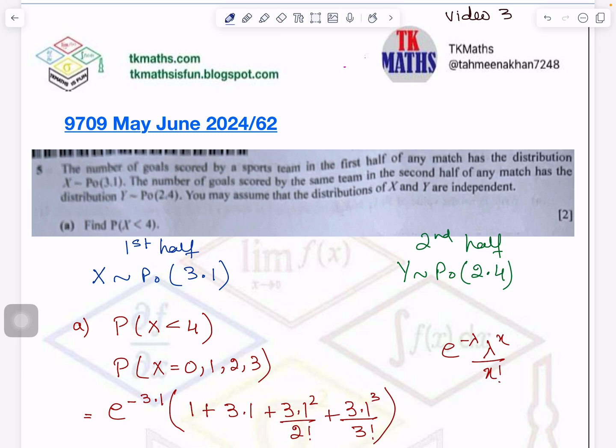So in this question they are talking about the number of goals. A team is scoring in the first half which is represented by the variable x lambda 3.1 and the same team is scoring goals in the second half, lambda is 2.4 variable is y.